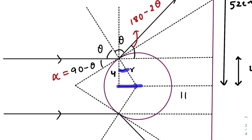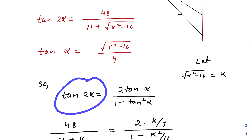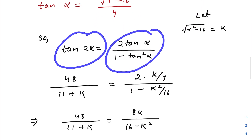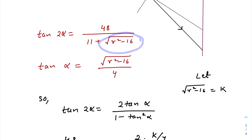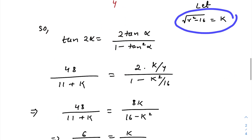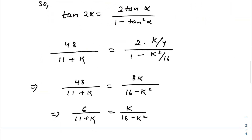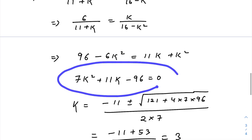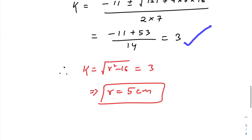We know tan 2α equals 2 tan α divided by (1 minus tan²α). Substituting, and for simplicity letting k equal root of (r² minus 16), we get a quadratic equation in k. Solving it, we get k equals 3. Since k equals root of (r² minus 16), we can find the radius of the sphere: r equals 5 centimeters.